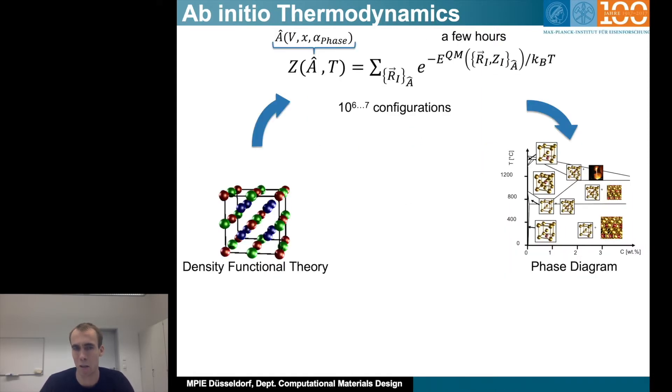So what does it mean ab initio thermodynamics? The naive idea would be that we use density functional theory and then compute 10 to the power of 6 or 10 to the power of 7 different configurations. Each configuration takes a few hours and then we have one free energy at a given concentration. Given this large amount of configurations and the huge time for DFT calculations, it would take a lot of time and CPU costs to compute phase diagrams this way.